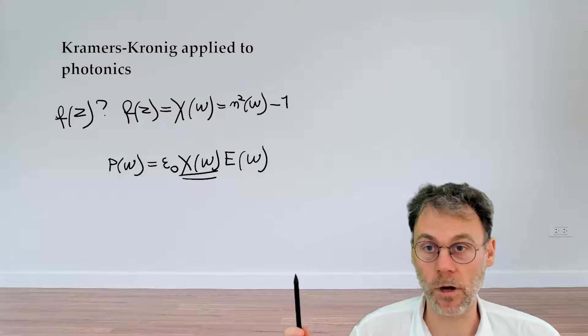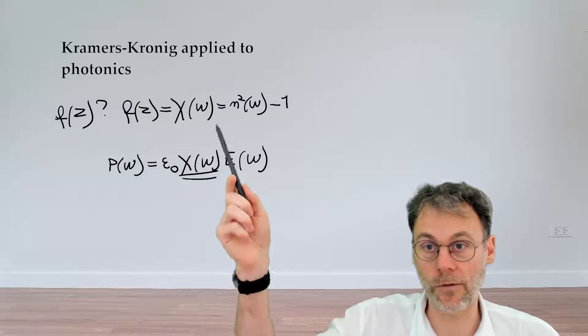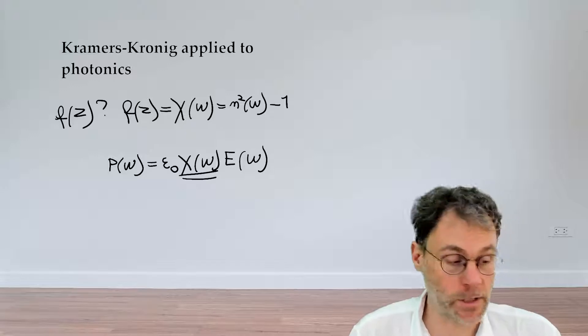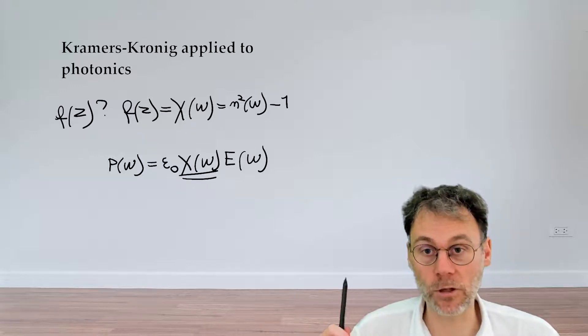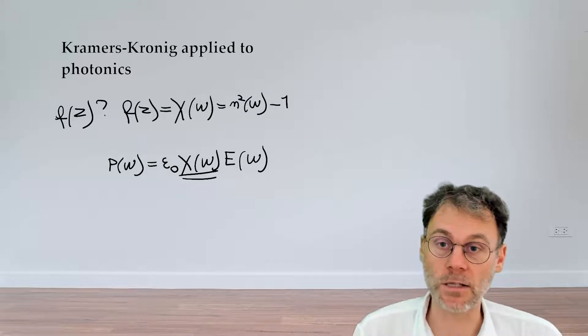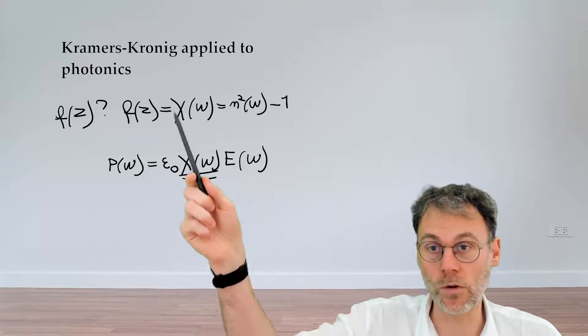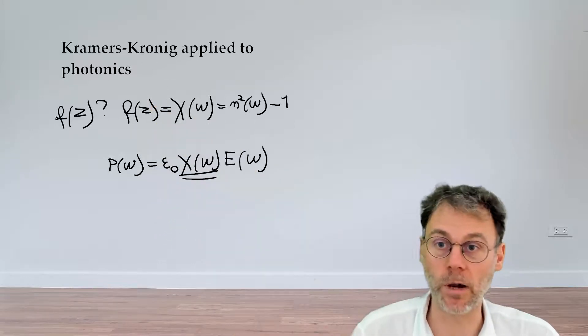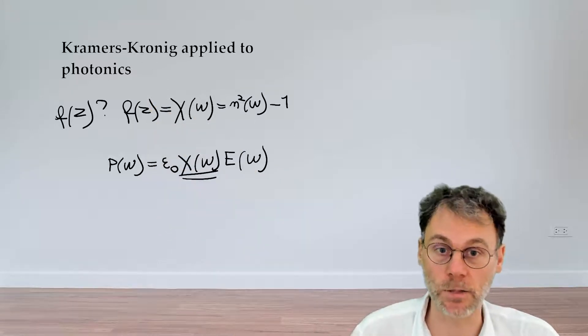Now this seems at first like a rather odd choice. Why do we have the refractive index squared minus one? But actually there is a very good mathematical reason why we use this particular function. Pause the video and see if you can identify why we use this particular form of f of z in order to be able to apply the Kramers-Kronig dispersion relationships.